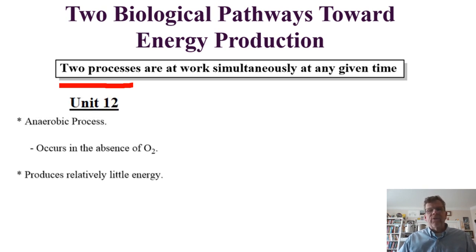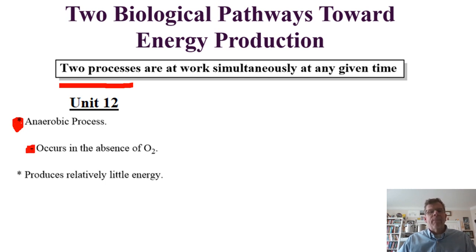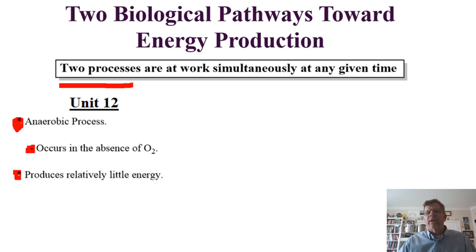The current unit, Unit 12, covers an energy production pathway with some salient features. The first biological process toward energy production is anaerobic — it occurs in the absence of molecular oxygen, O2. That's really only meaningful when compared to the next one, which does require the presence of molecular oxygen to move forward. This Unit 12 process, this first energy production pathway, produces relatively little energy compared to the next energy production pathway.